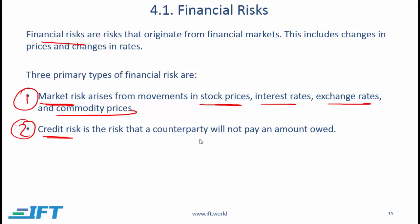Number two is credit risk. If I buy a bond and the counterparty is supposed to make scheduled coupon payments and scheduled principal payments, the risk of those payments not being made is called credit risk. Sometimes credit risk is also referred to as default risk or counterparty risk. It occurs in bonds and in derivative instruments — anytime a party owes money to another party, the party that is supposed to receive faces credit risk.